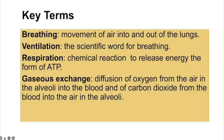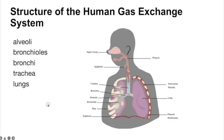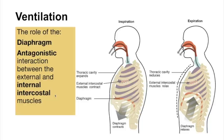Gas exchange doesn't just occur in the alveoli — that is just for mammals. The key structures you need to know for the human gas exchange system are the alveoli, bronchioles, bronchi, trachea and lungs, all labelled on the diagram. Pause here if you need to note that down. Now let's look at how humans ventilate — it involves the diaphragm muscle.